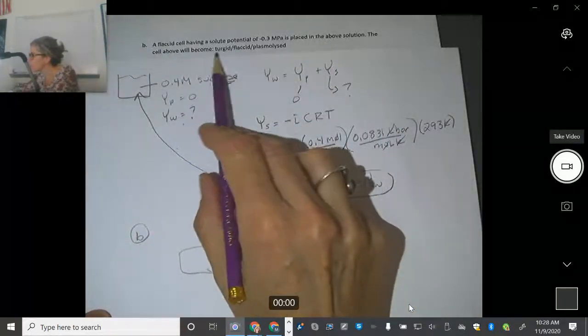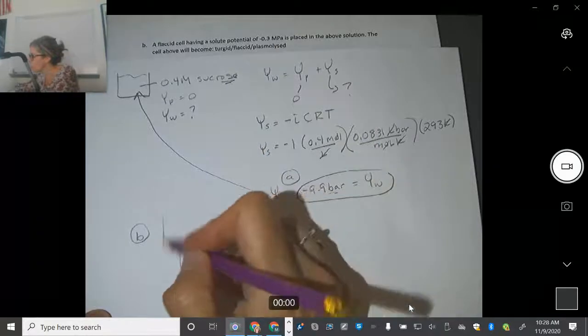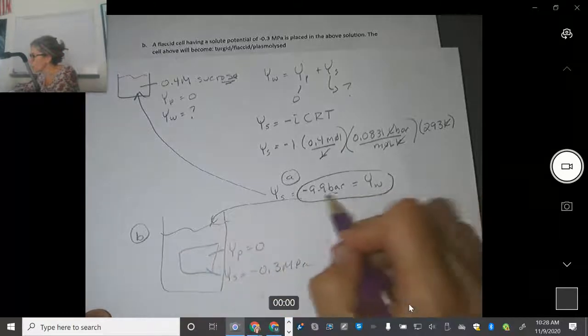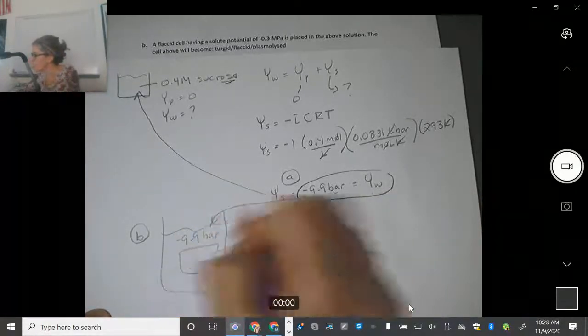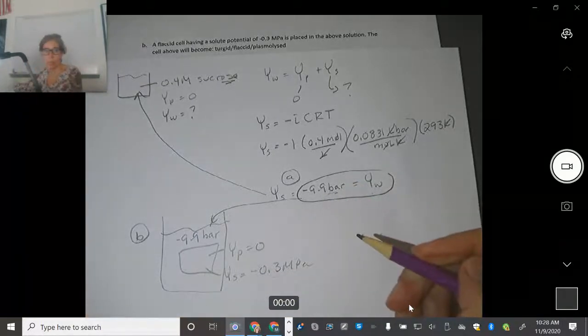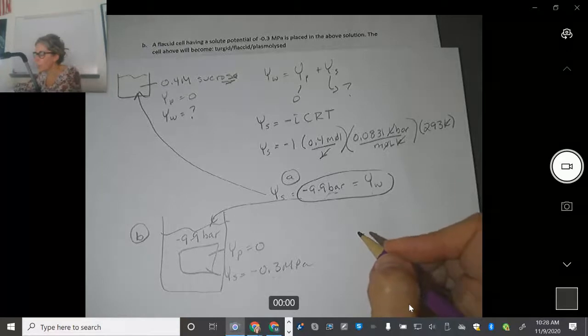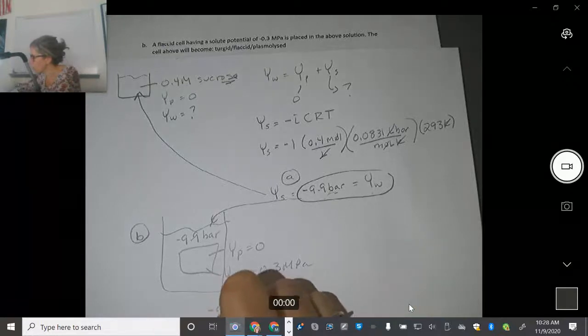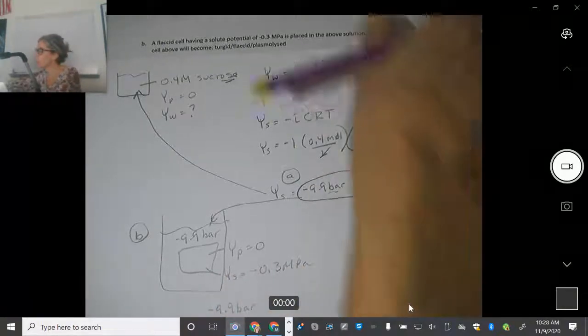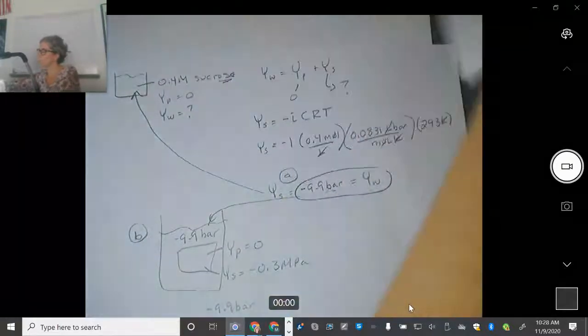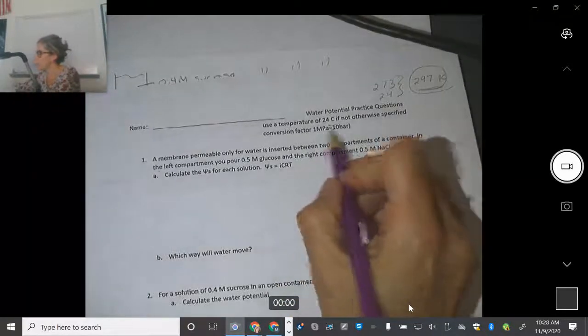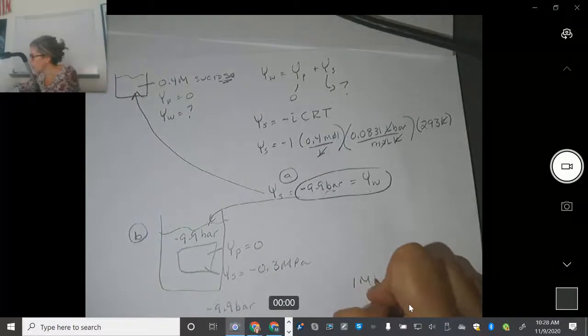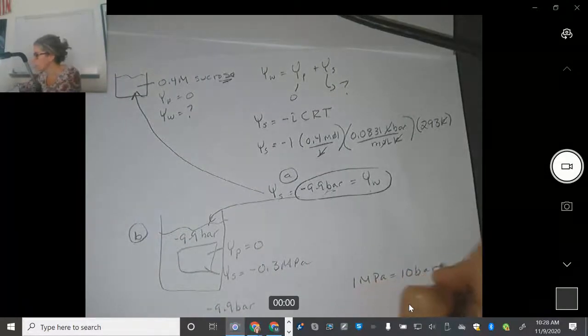But what does it say? The cell is put into the above solution. So here's the solution. The solution has a water potential of negative 9.9 bars. So I have to convert one or the other. I can do it really either way, but I think I'm going to convert the bars. So negative 9.9 bars. It tells you up above here that one megapascal equals 10 bars. So I'm going to use that information. One megapascal equals 10 bars. So I'm going to do a conversion.